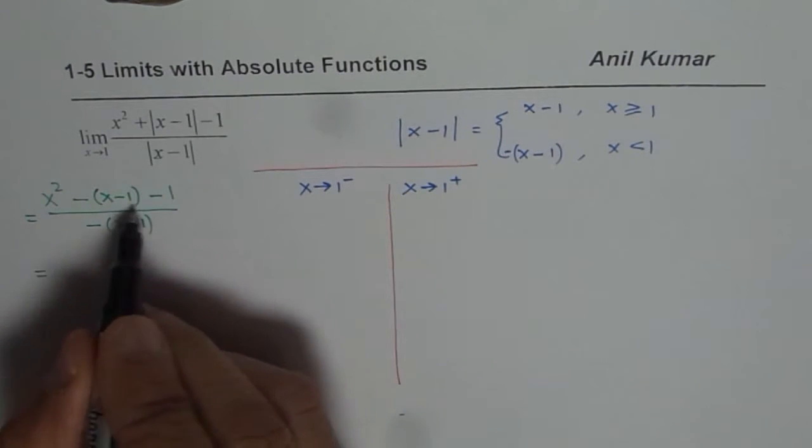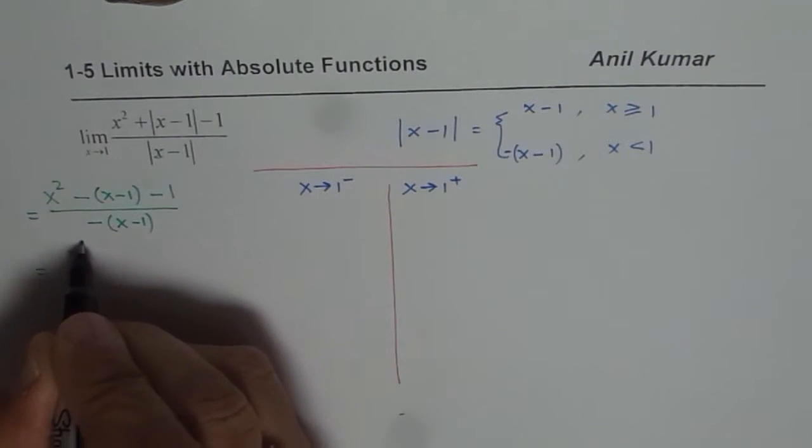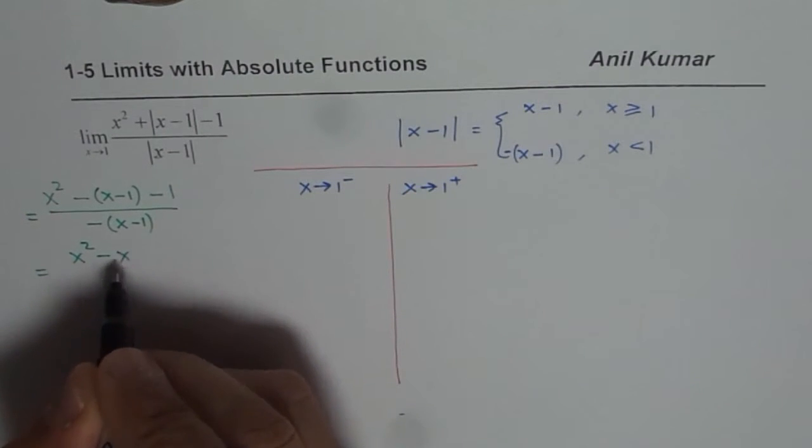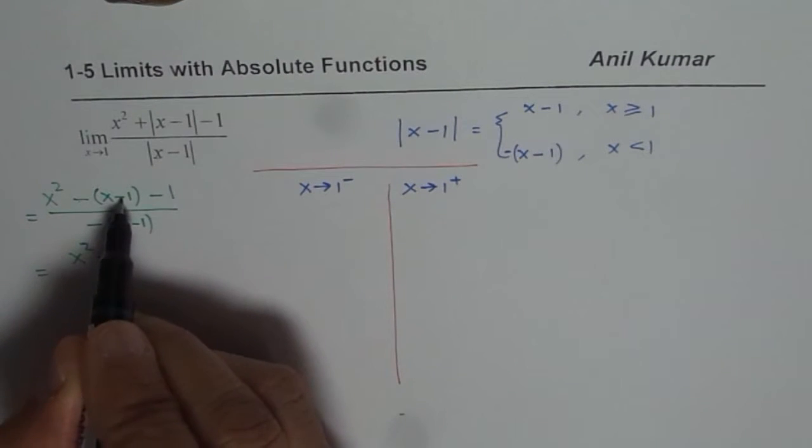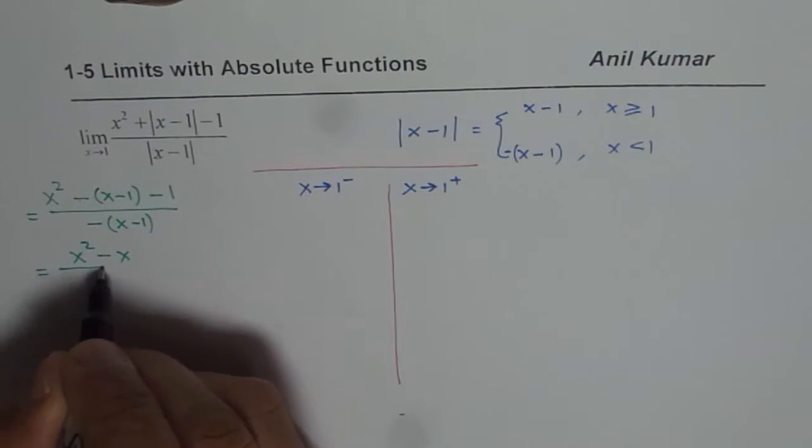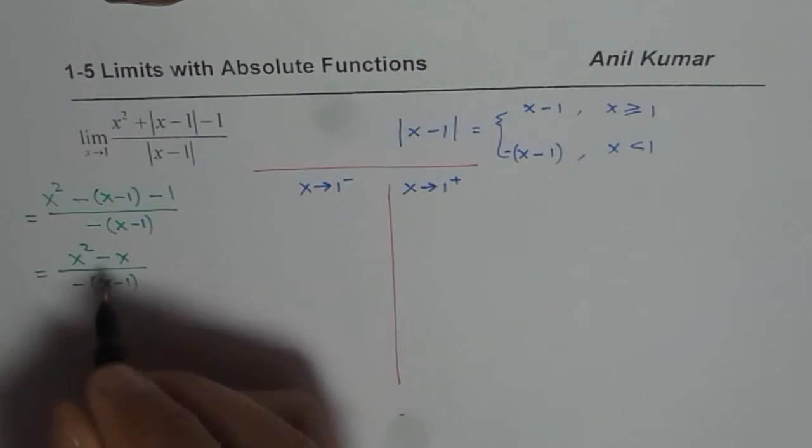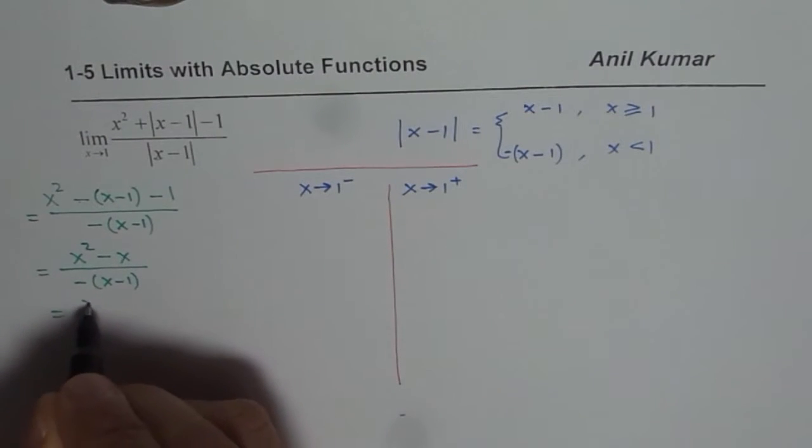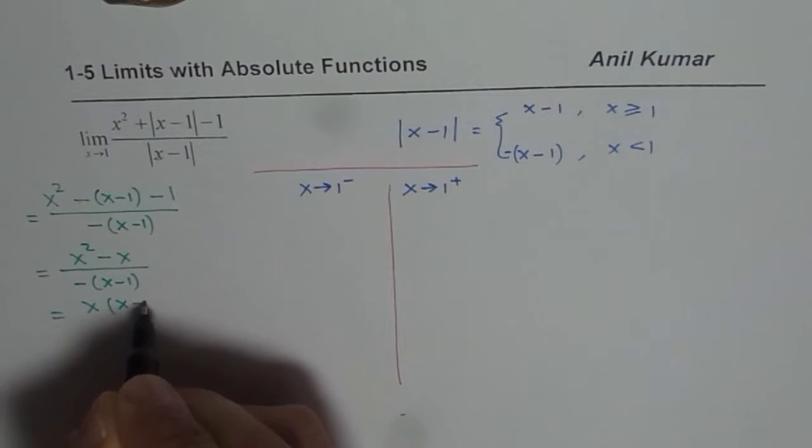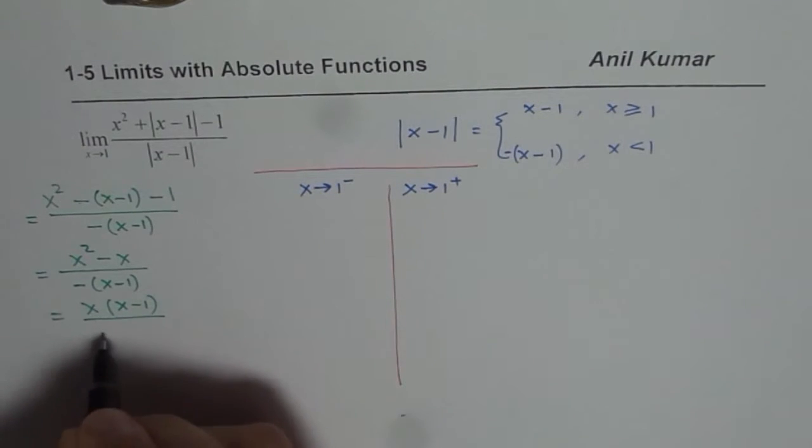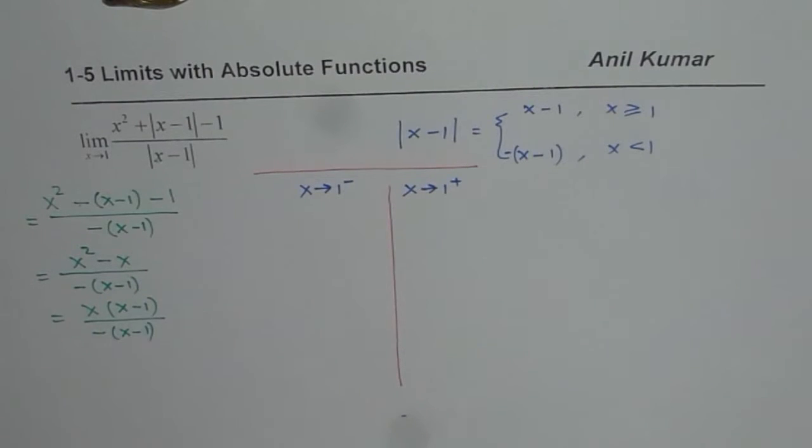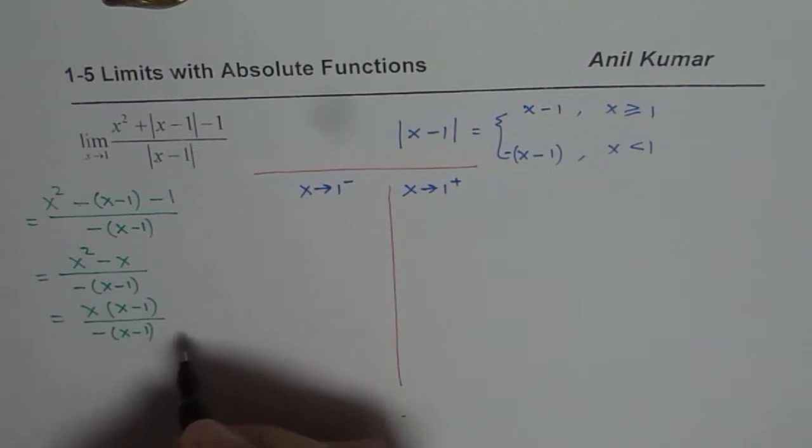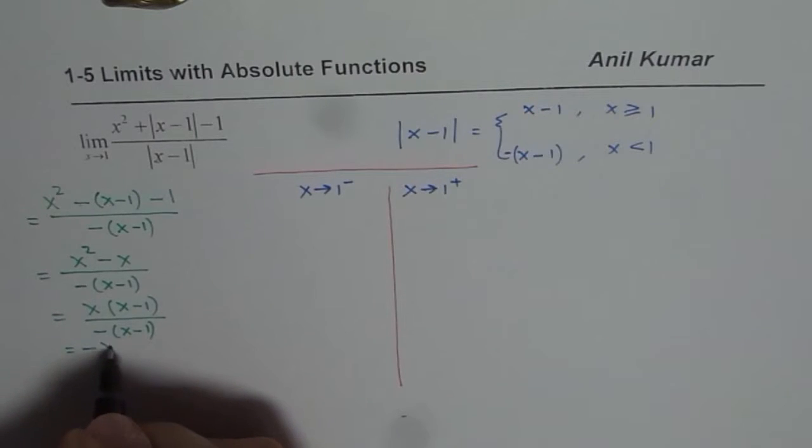Now in that case, let me just expand this and see what we get. So x squared minus x minus and minus becomes plus. So that plus 1 minus 1 becomes 0. So we are left with that. And in the denominator, we have minus of x minus 1. Now this could be written as I can factor x out. So I get x minus 1 over minus of x minus 1. Now x minus 1, x minus 1 cancel out. So what we get here is minus x.